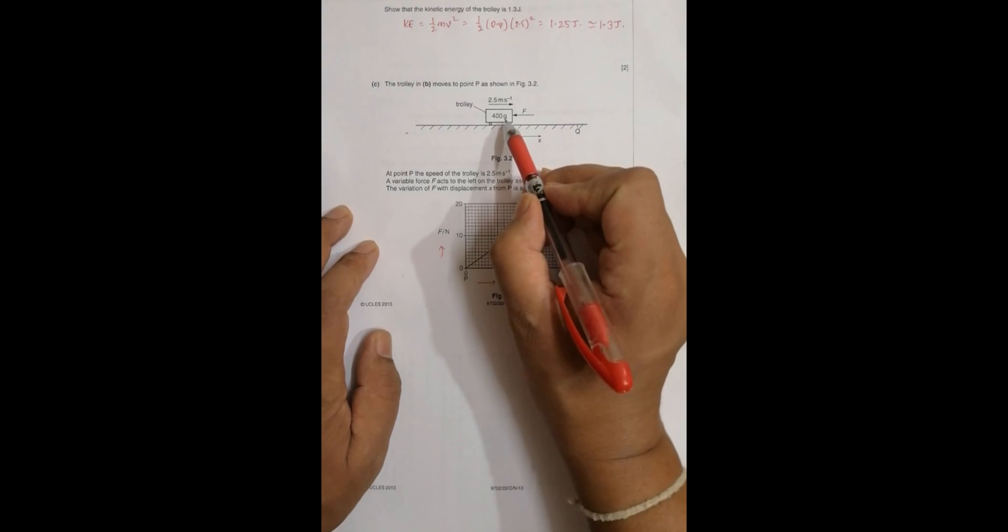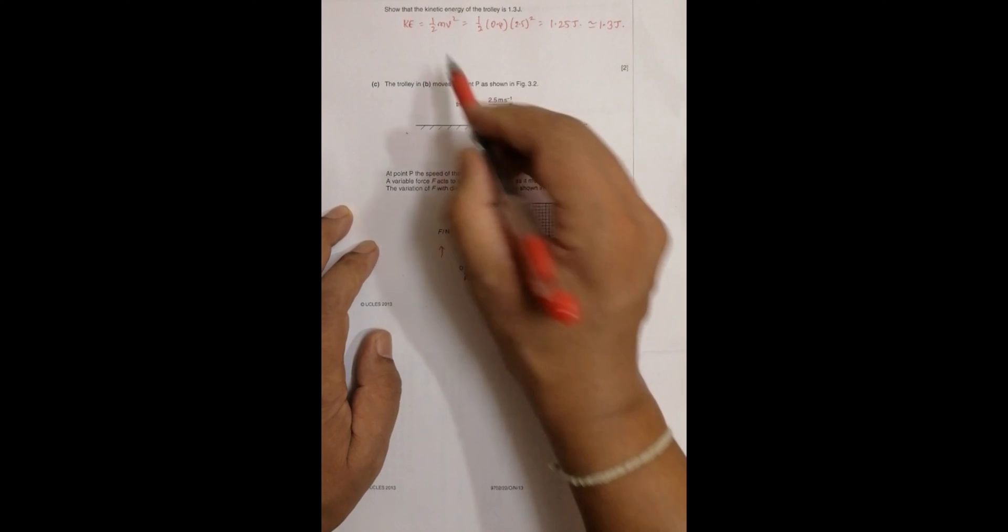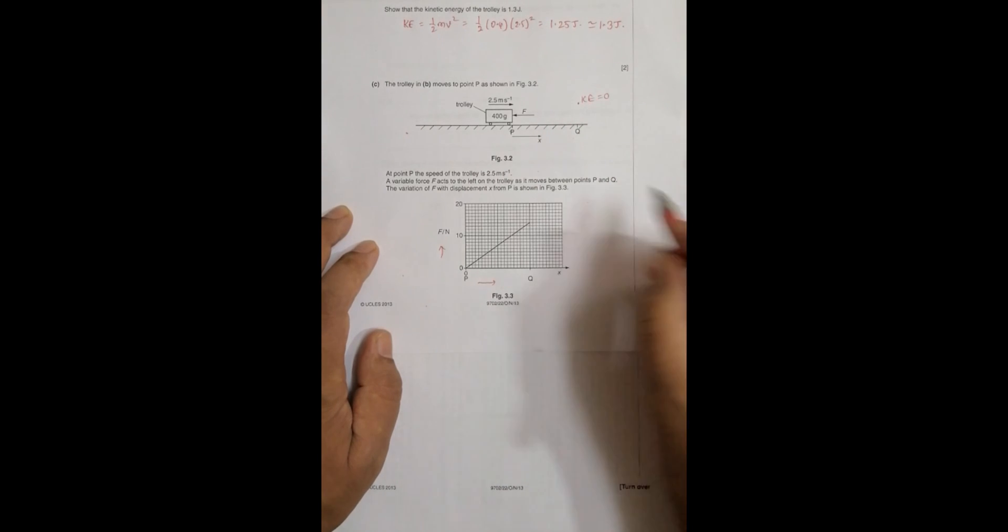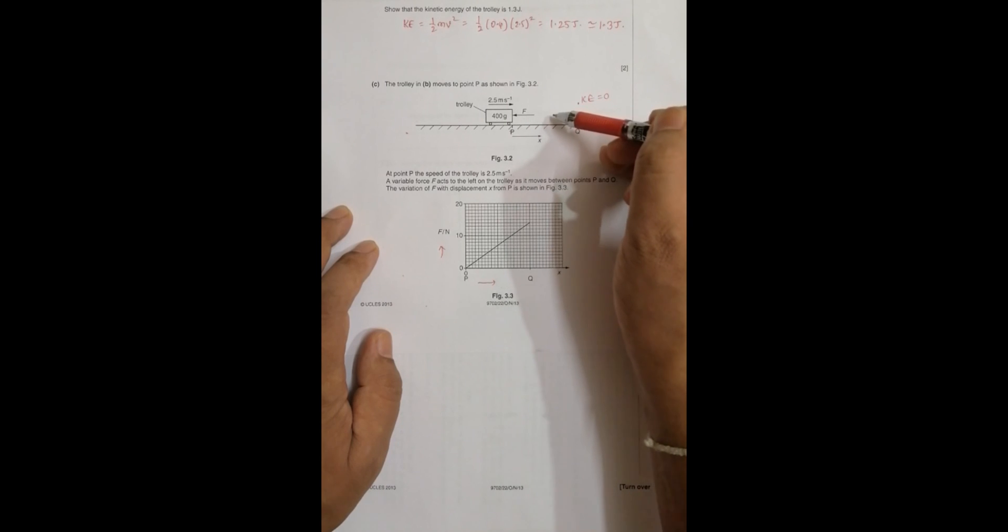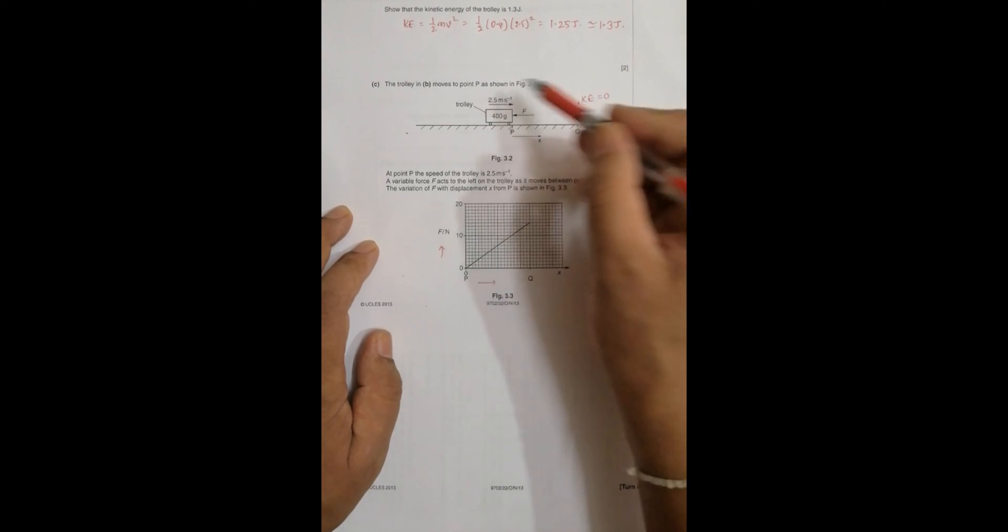For that, what we have to realize is we have to apply the principle of work-energy theorem. Till this position it has a KE of this much. When it stops here, the KE becomes equal to zero. So the decrease of KE should be equal to the work done on the body. That is the work-energy theorem.